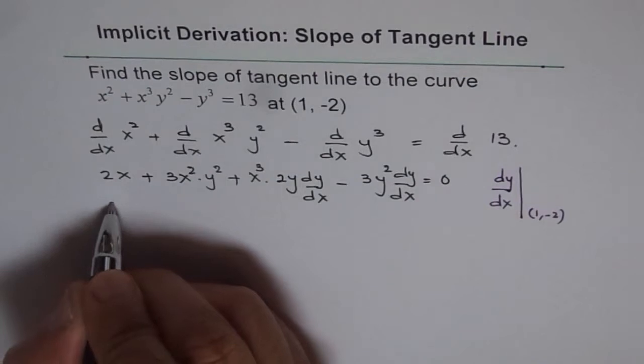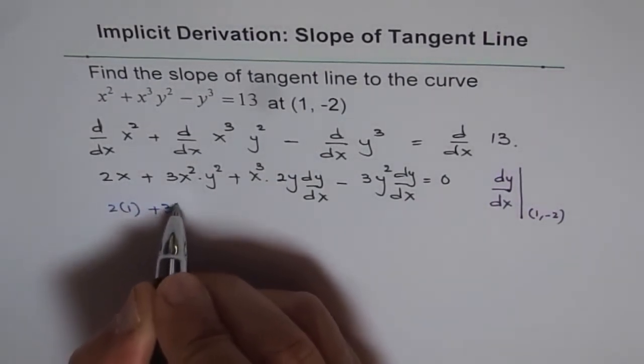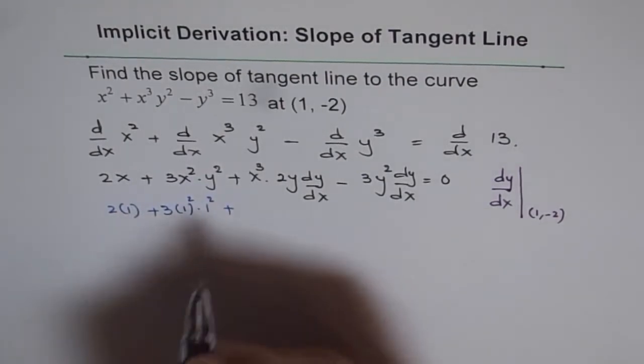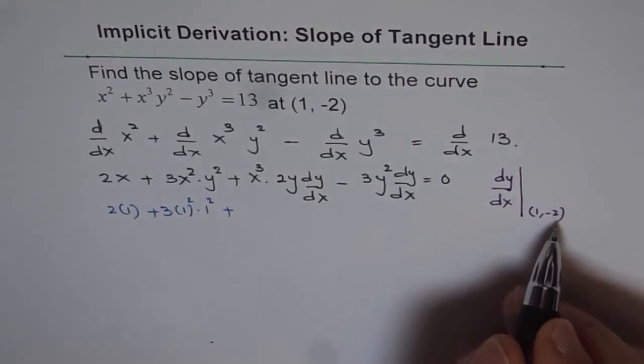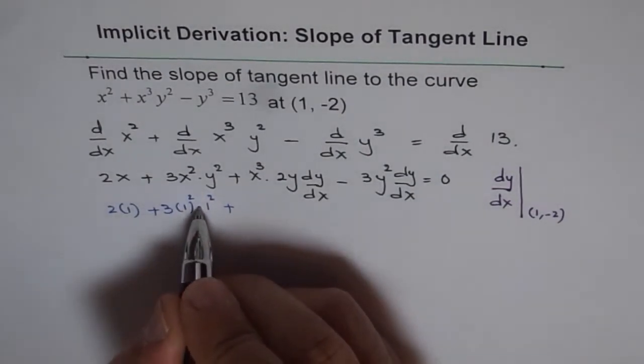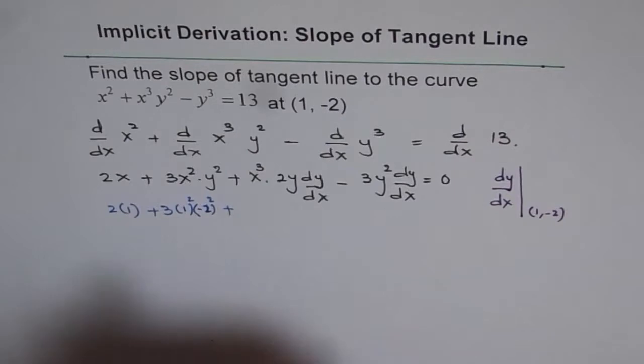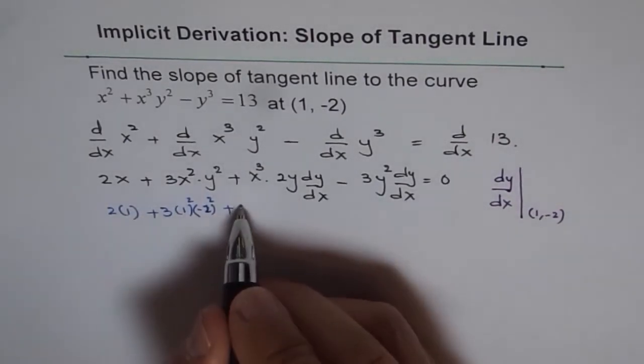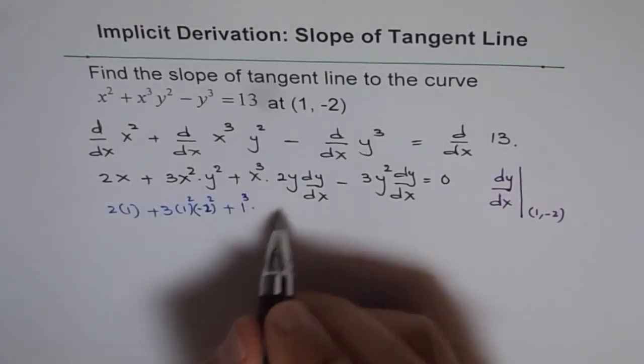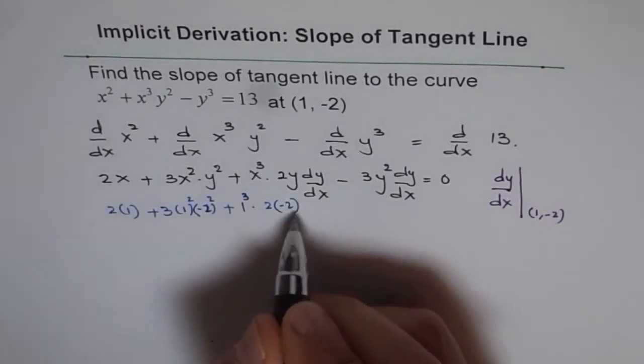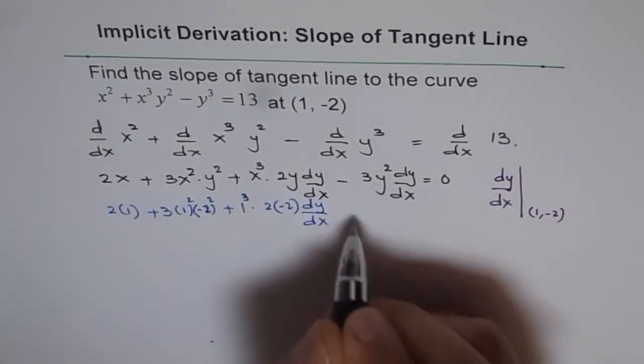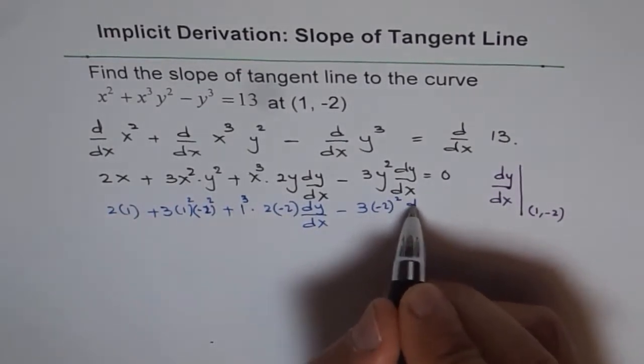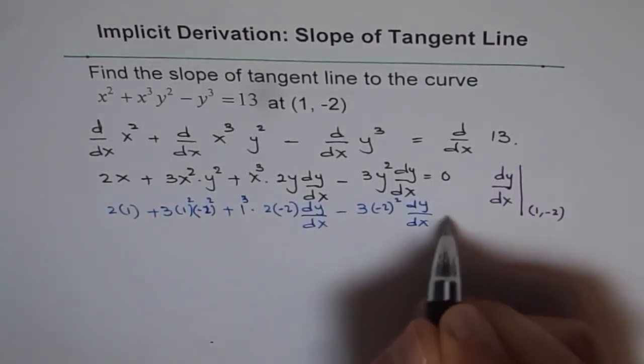So we get 1 for x. So we get here 2×1 + 3×1²×(-2)² - and y is -2, I should have written -2. Let me make correction. Plus, x³ is 1, so 1 times 2×(-2) dy/dx minus 3×(-2)² dy/dx = 0.